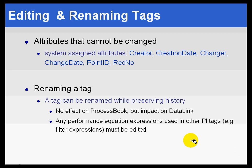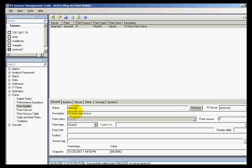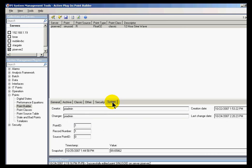There are some attributes of a PI tag that simply can't be changed — those are system-created. Things like the record of who created the tag, when it was created, when it was changed, who changed it, that type of thing. More or less, you are stuck with those because they are system generated. Here is an example: if we go over to our Point Builder and System Management Tools and select a tag, then go into System, this will show you those system attributes — things that we really can't change.